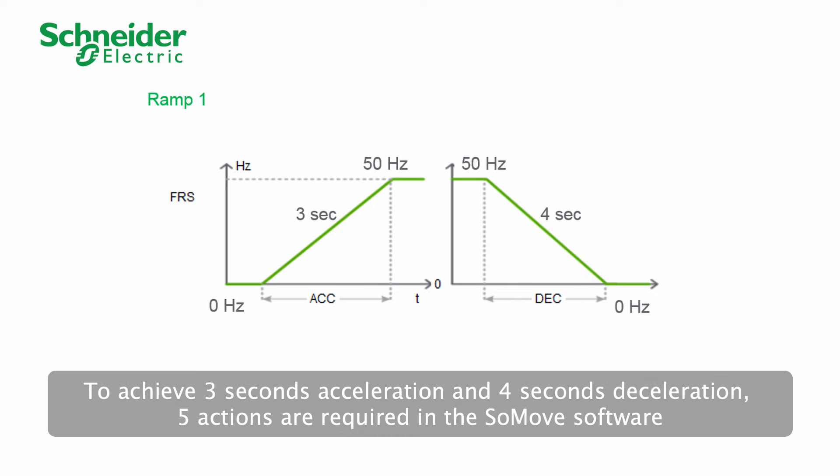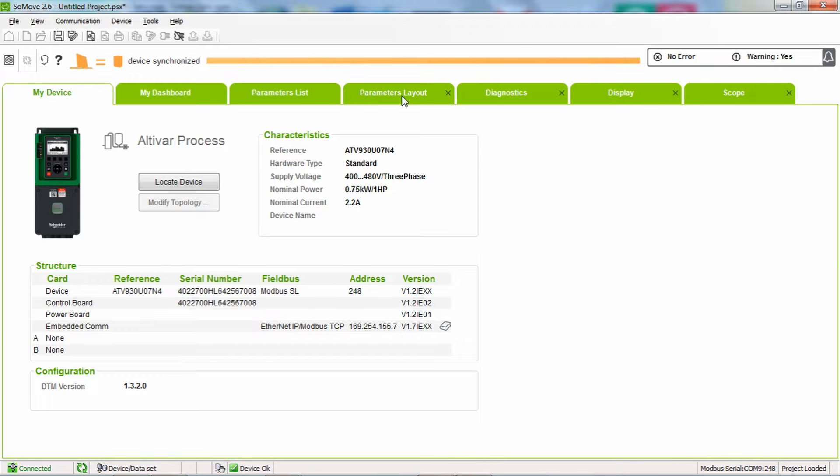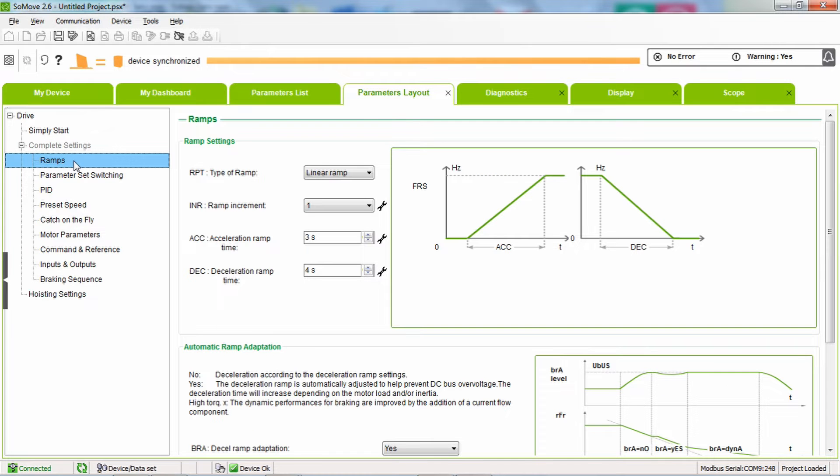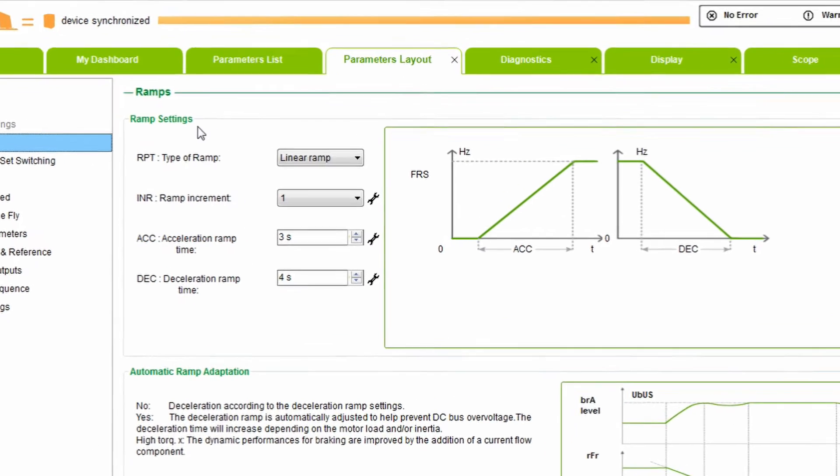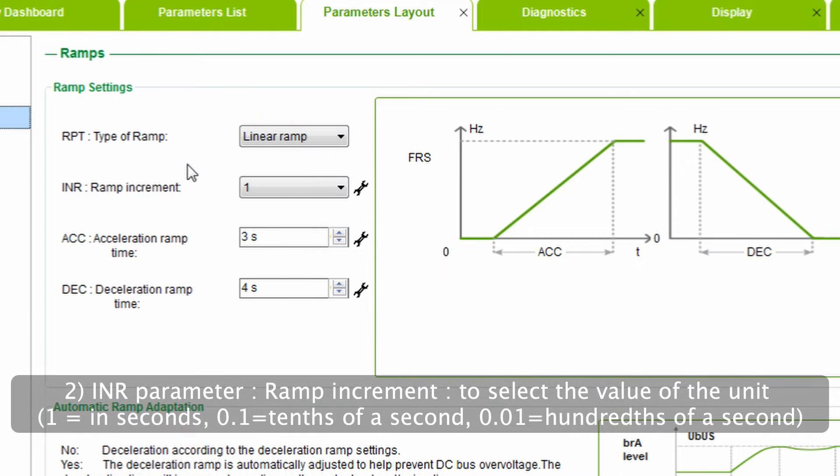To achieve three-second acceleration and four-second deceleration, five actions are required in the SoMove software. Number 1: RPT parameter. This is the type of ramp. In our case, we will use a linear ramp.